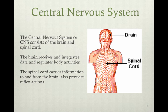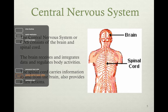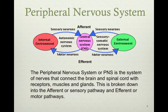The central nervous system contains the brain and spinal cord. The brain receives and integrates data and regulates body activities. The spinal cord carries information to the brain and also provides reflexive action — for example, if you put your hand on a hot stove, it'll move it without you even thinking about it. This is called a reflex arc.